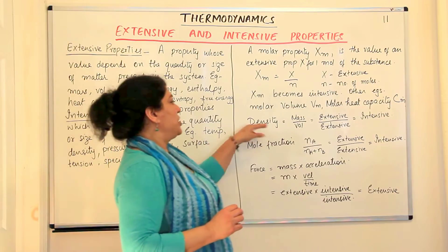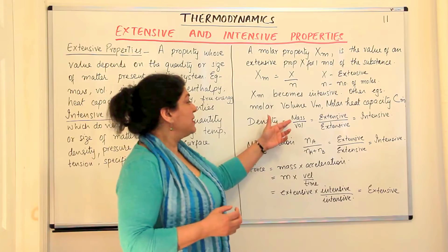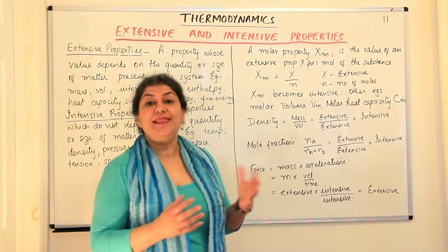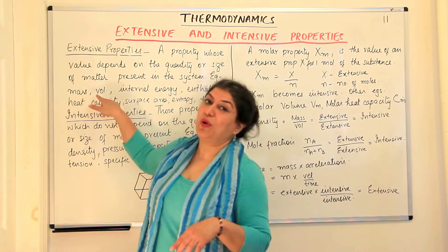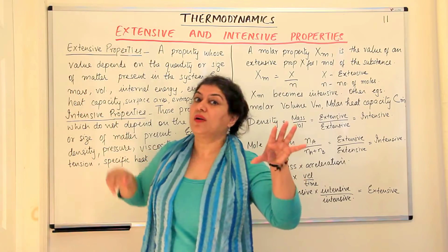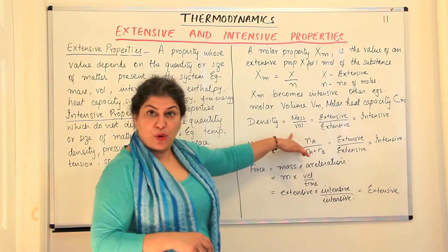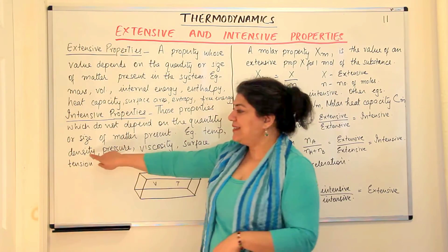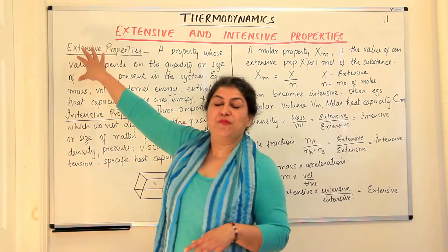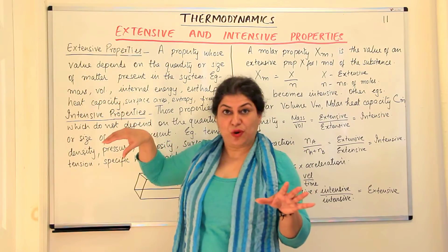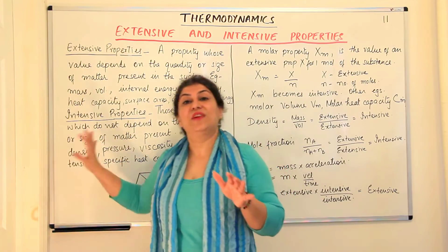Another property I have already explained is density. Density is mass per unit volume — mass and volume are both extensive properties, both depending on the quantity of substance. But when you divide an extensive property by another extensive property, you get density, which is an intensive property. So dividing an extensive property by a specific number gives an intensive property, and dividing an extensive property by another extensive property also gives an intensive property.